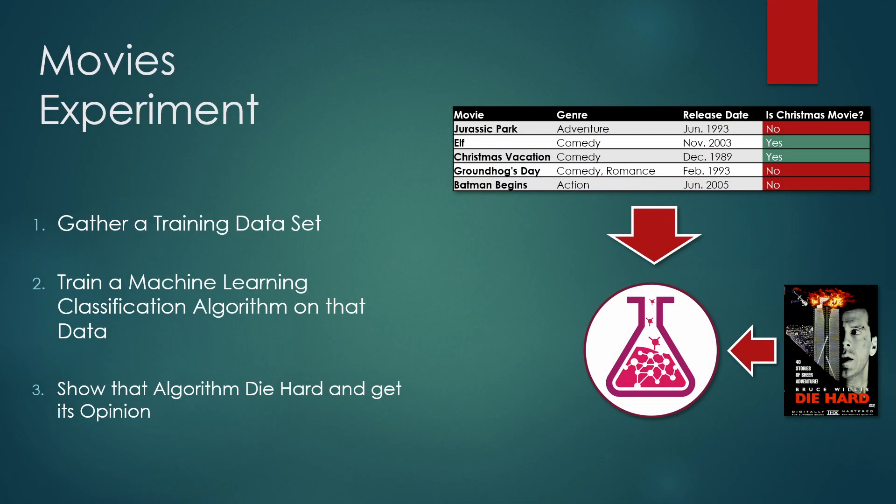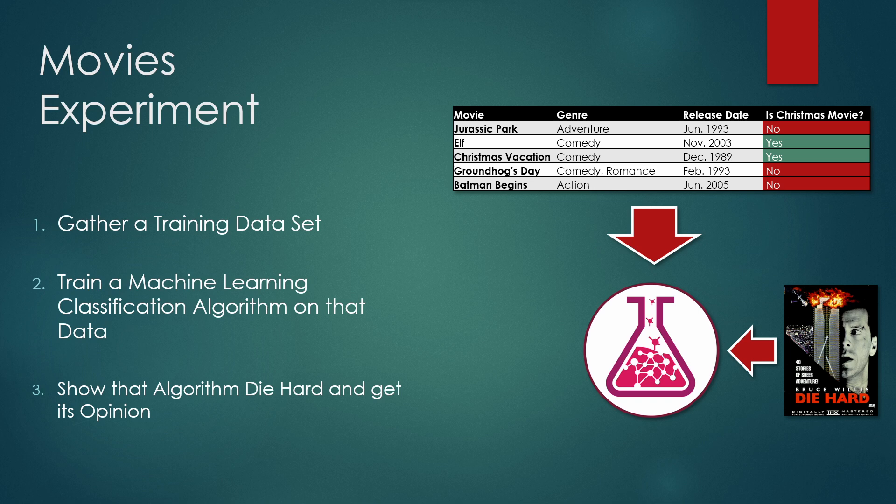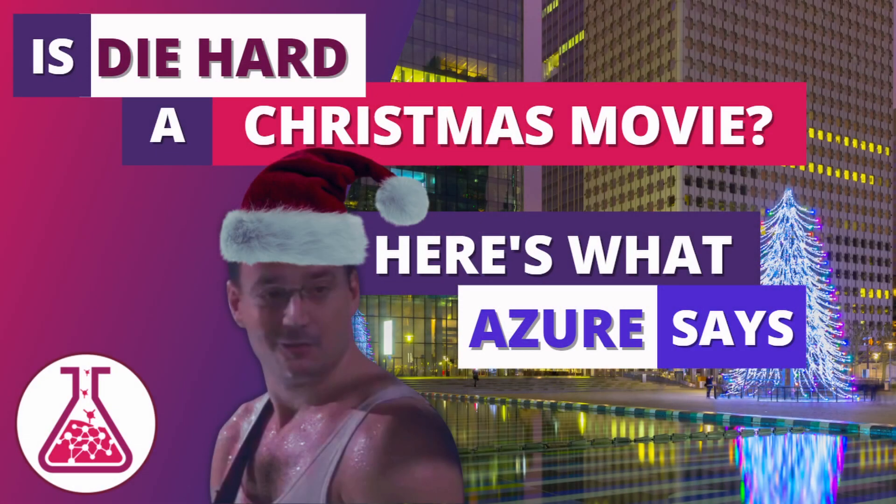Another example of classification is a machine learning experiment I did last year around the movie Die Hard. My wife and I were debating if Die Hard should be considered a Christmas movie. To solve this debate, I built a machine learning model around historical movie information that included both Christmas movies and non-Christmas movies. Once this model was trained, I asked it if Die Hard should be considered a Christmas movie or not, and it was able to predict the expected value of the 'Is Christmas Movie' label for that movie. If you're curious about this project, I have a number of videos on this channel about it, so please check those out.